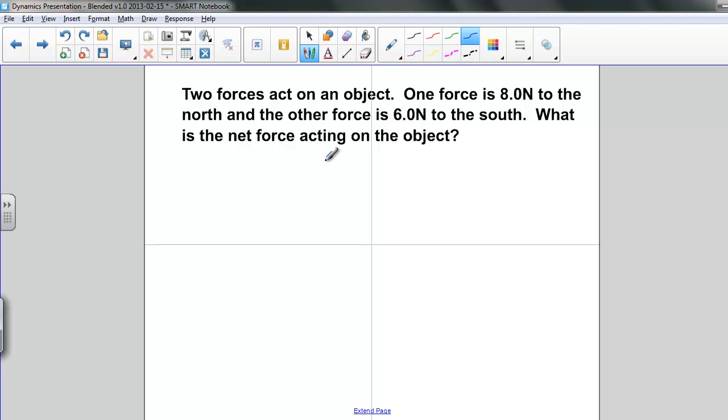This is a question you should have tried for yourself. Two forces act on an object. One force is 8 newtons and it's going to the north. The second force is 6 newtons, and it's heading to the south. What is the net force acting on the object?